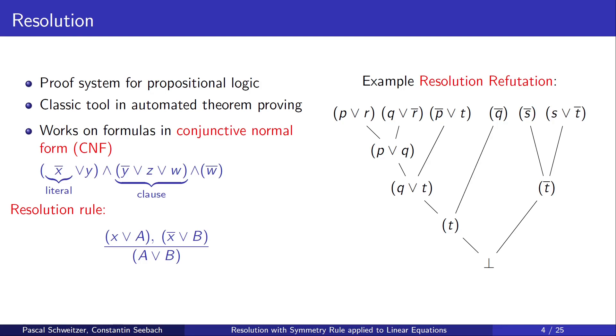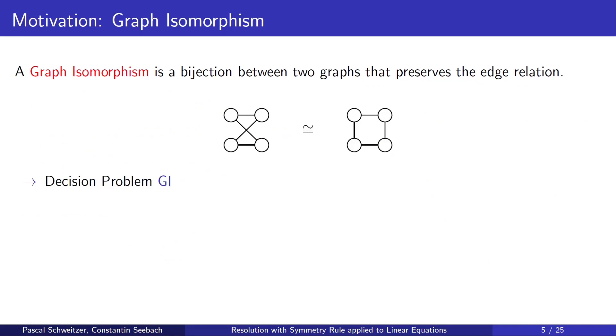Resolution is a proof system for propositional logic and a classical tool in automated theorem proving. It works on formulas in conjunctive normal form and uses just one deduction rule. Here is an example of how a resolution refutation looks like. We are given these clauses in the top row and we form a tree-like deduction using our resolution rule. At the end, we arrive at the empty clause. This means that this set of clauses is unsatisfiable.